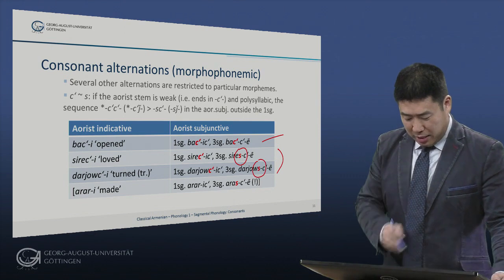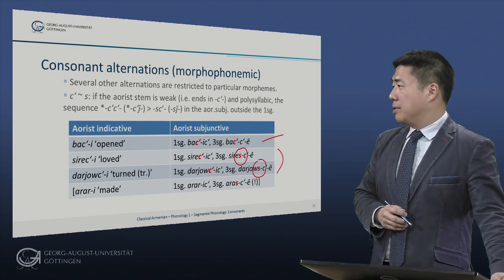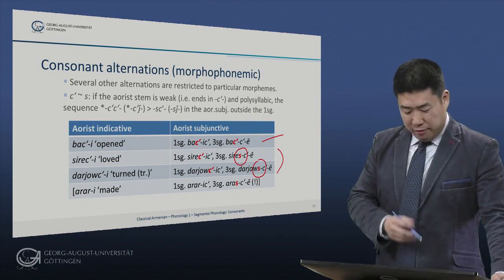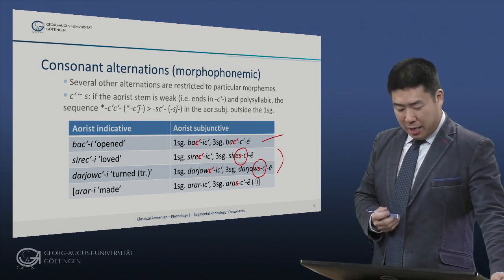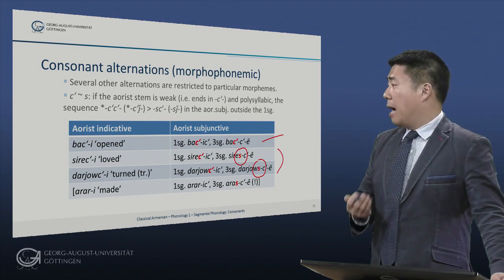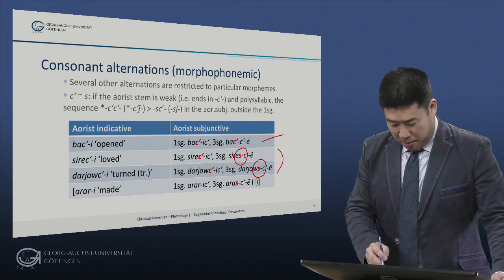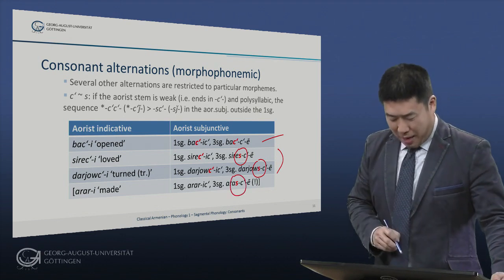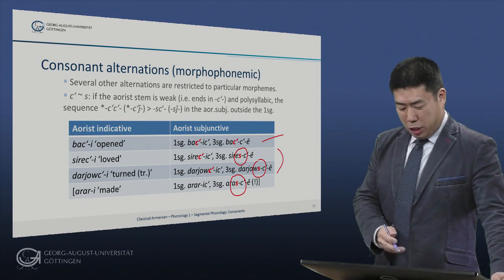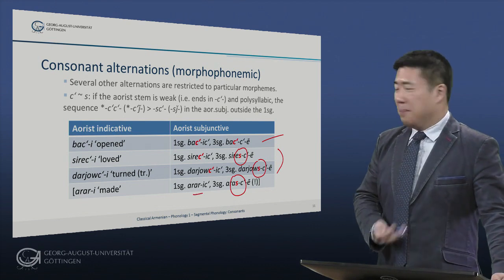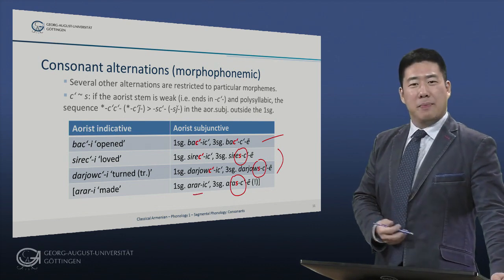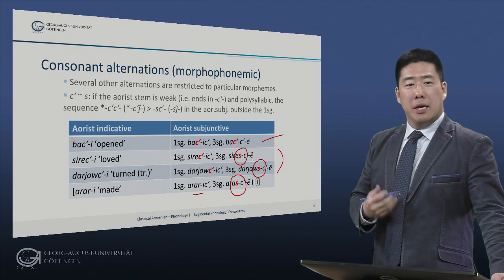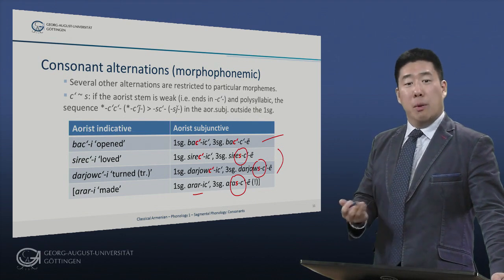Finally, here's a nice irregularity. The first singular of the verb 'make' is aorist 'I will make', but the third singular has adopted the same pattern. It's an -ar stem, so it shouldn't change, but it has adopted this pattern: 'ar-ras-tsi' meaning 'he or she will make'.